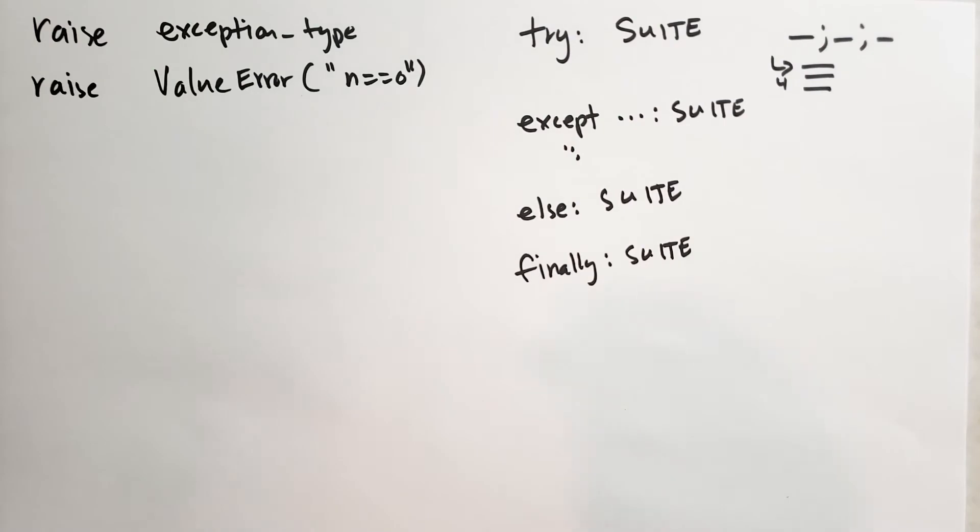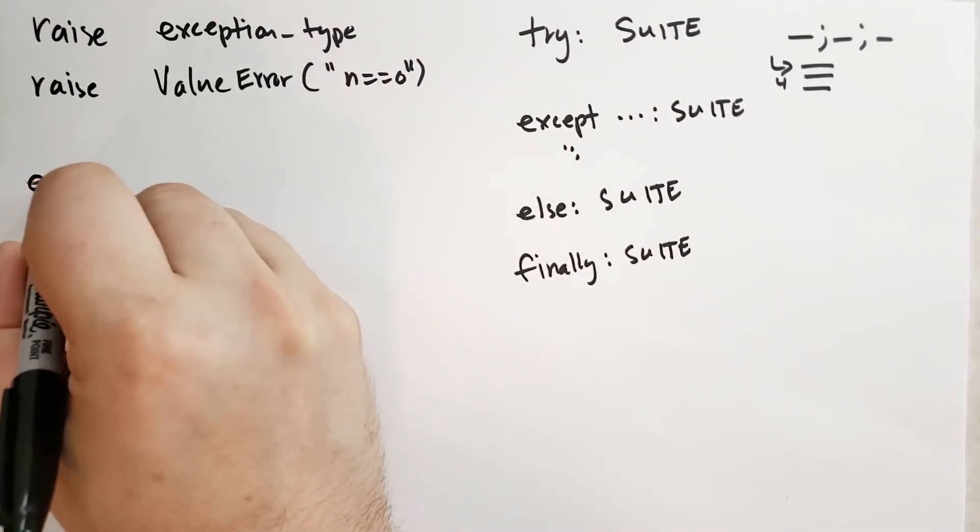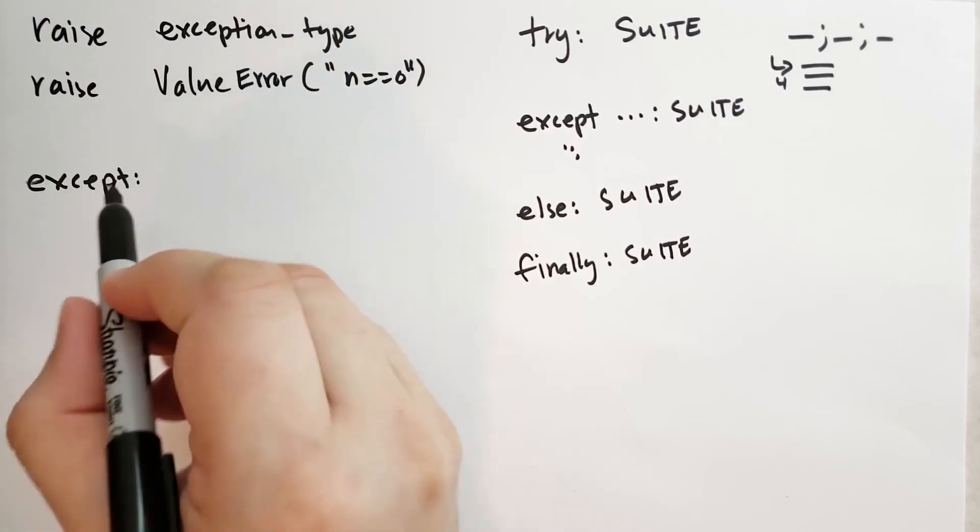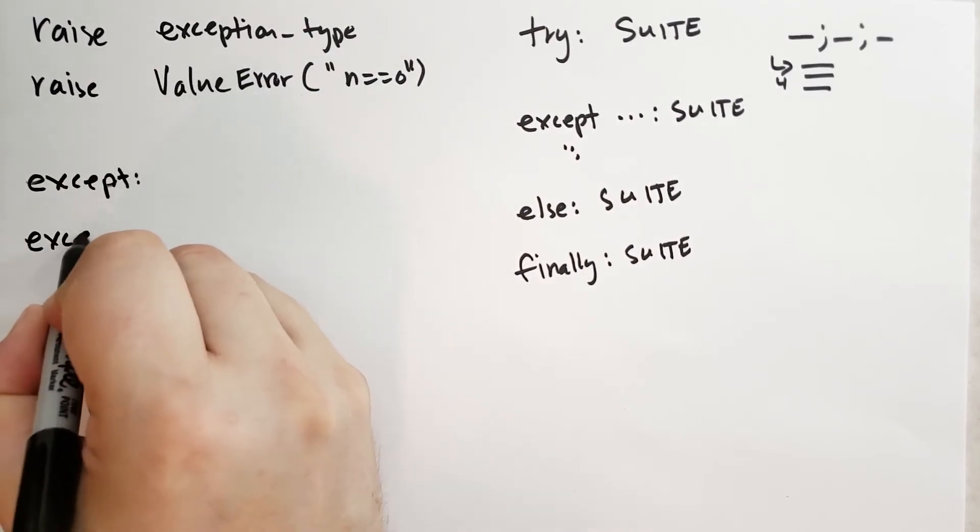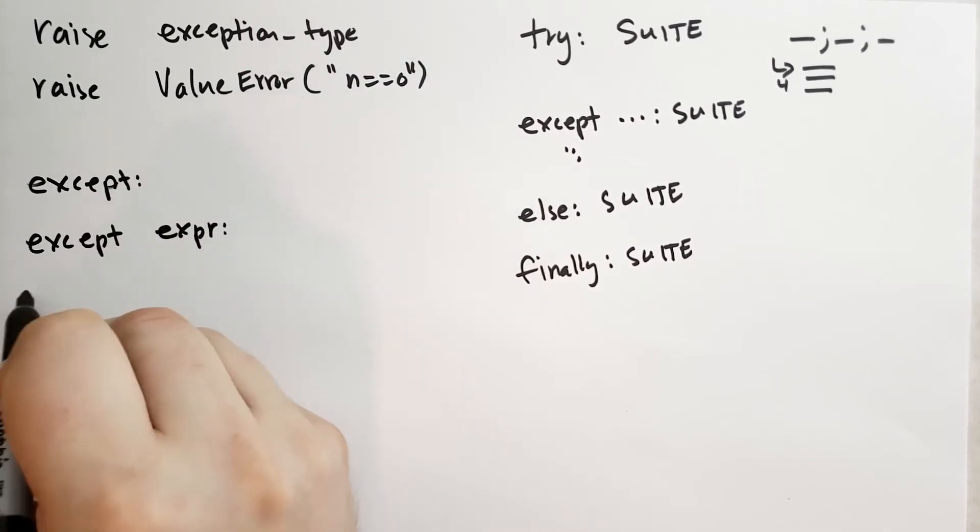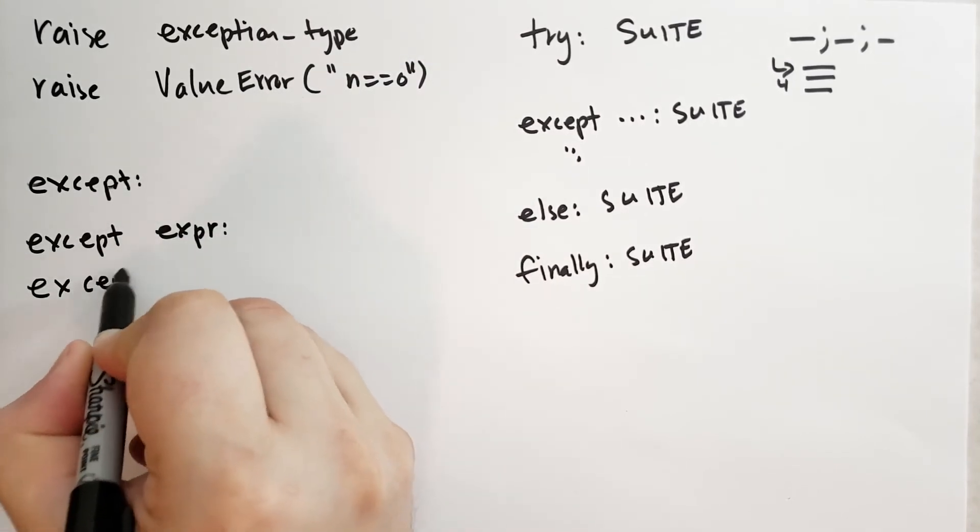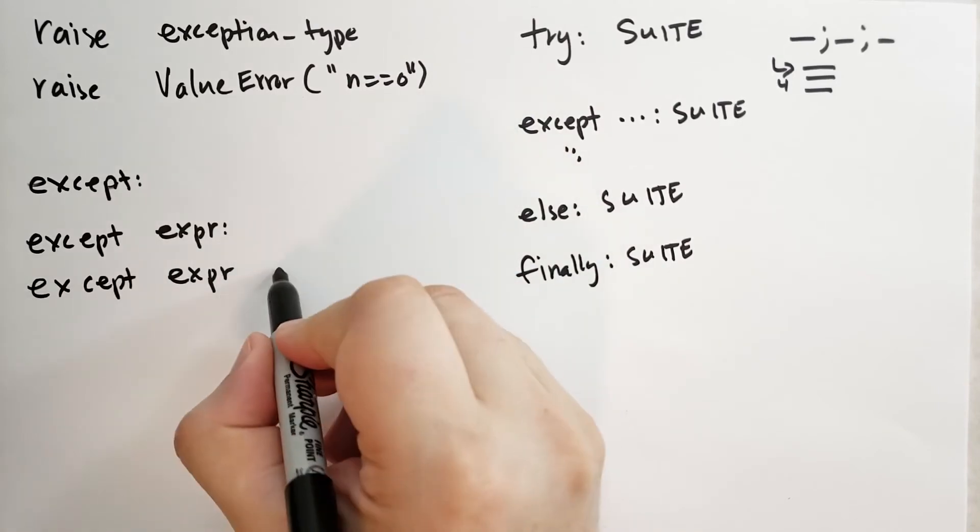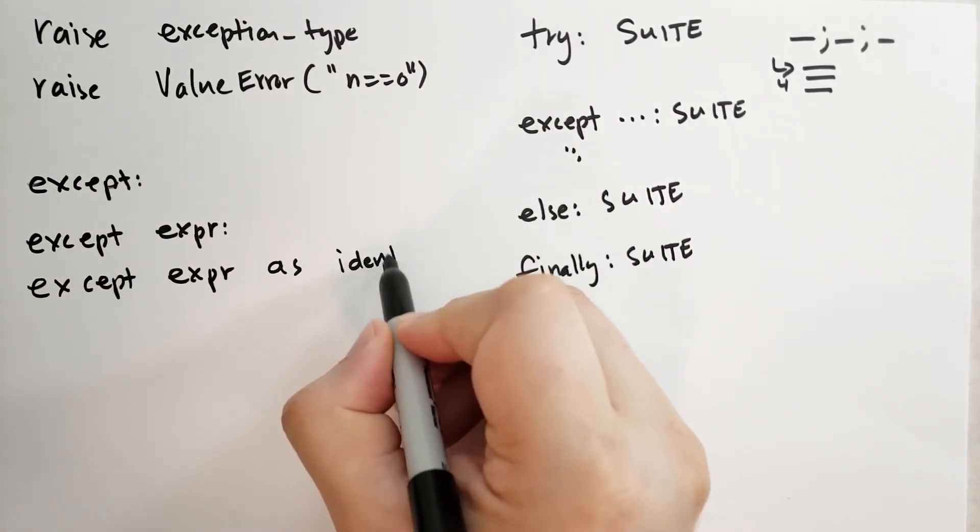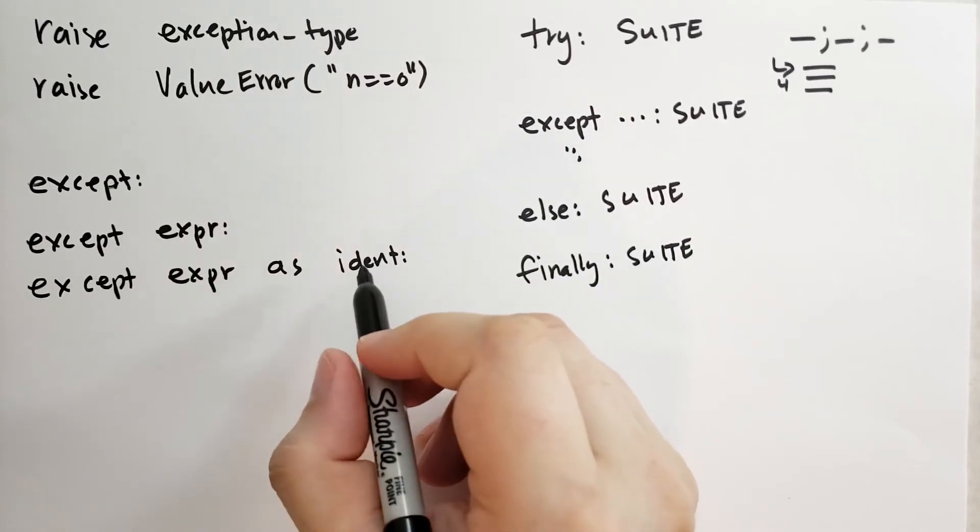Let's talk about how the except syntax works. There's three forms of the except syntax. The first one is except with no parameters, except with a single expression, and then except with an expression, and the keyword as, followed by some identifier. This identifier is a variable name.